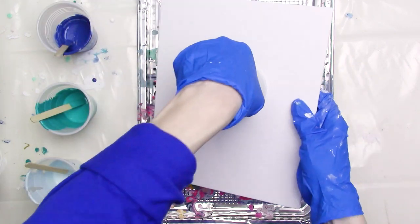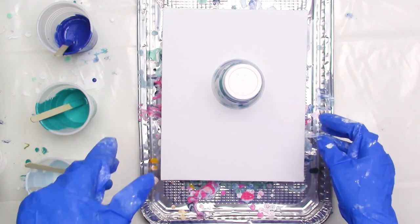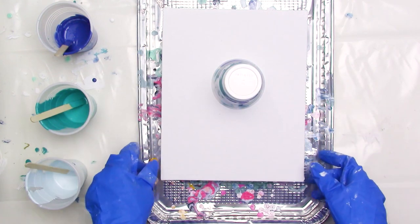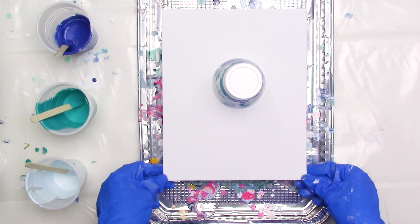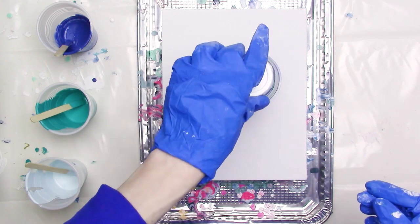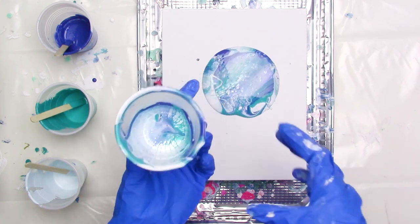When I'm done layering the paints, I'll flip the cup onto the canvas, leave it there for about 10-15 seconds until the paint has a chance to run out of the cup and onto the canvas. Then I'll lift the cup and start tilting the canvas to get the paint moving.